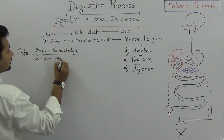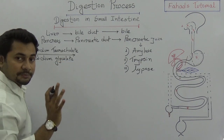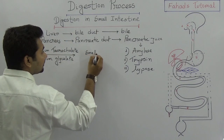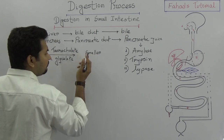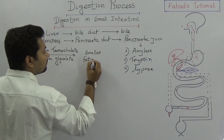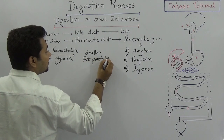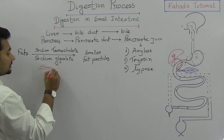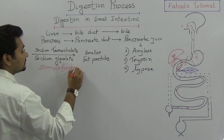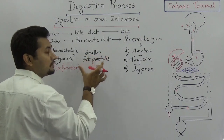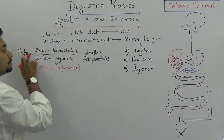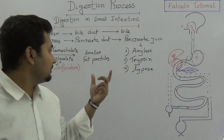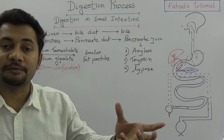The bile salts — sodium taurocholate and sodium glycocholate — break the large fat particles down into smaller fat globules, which are milky fat particles. This process is known as emulsification.